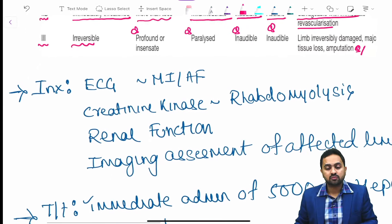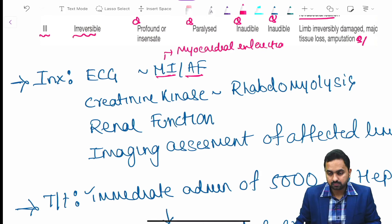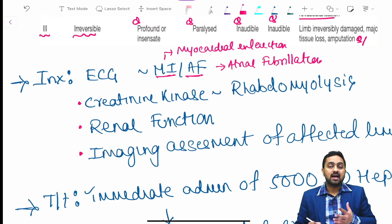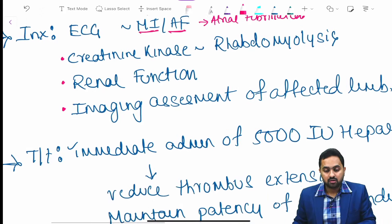Investigations would include ECG to detect myocardial infarction and atrial fibrillation, creatinine kinase because of rhabdomyolysis, renal failure, renal function, as rhabdomyolysis might cause renal failure, and imaging assessment of the affected limb.